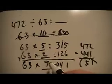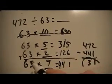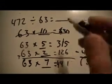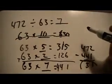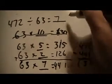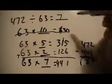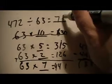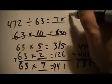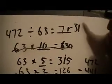So I'm just going to write my answer. So it took me 7 groups of 63 to get me as close as I could to 472, and I know if I added 31 more, I'd get to the 472. So I know my remainder is 31, so my answer is 7 remainder 31.